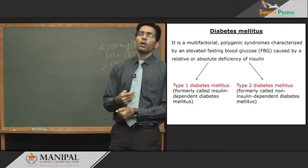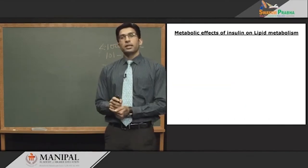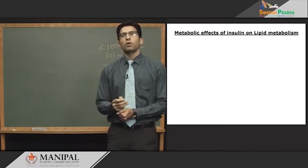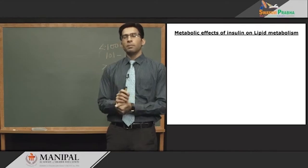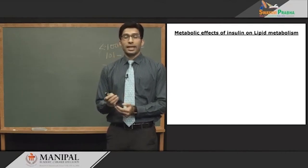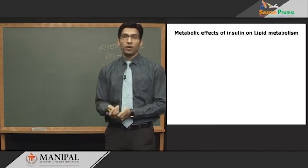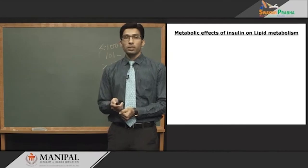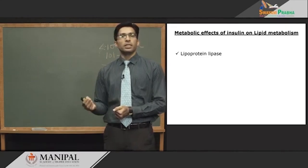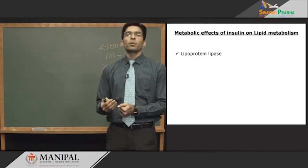Now let us see the metabolic effect of insulin on lipid metabolism. Insulin is a polypeptide hormone released from the beta cells of the pancreas. It has 51 amino acids with A and B chains, and is released in response to a high glucose or carbohydrate-rich diet. First, insulin induces lipoprotein lipase — an enzyme present in the capillaries of adipose tissue and skeletal muscles — increasing its secretion.